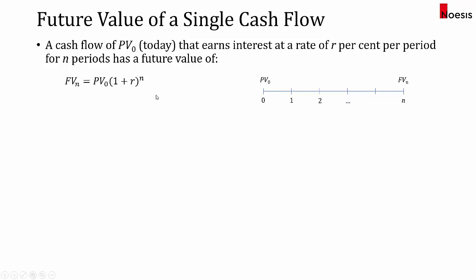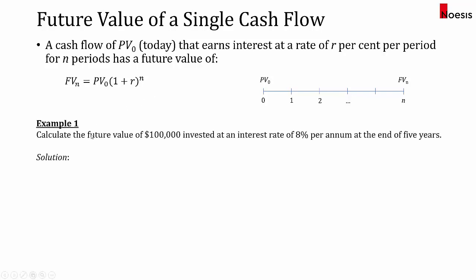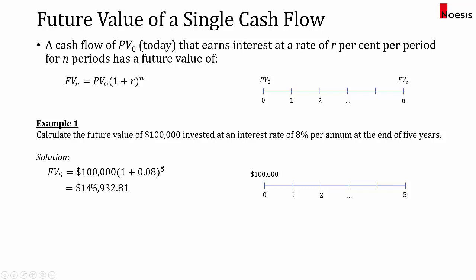For example, let's calculate the future value of $100,000 invested at an interest rate of 8% per annum at the end of five years. Showing the timeline for five years, with $100,000 invested today at 8%, the future value at year five will be 100,000 multiplied by (1 + 0.08) to the power of 5, which gives us $146,932.81.